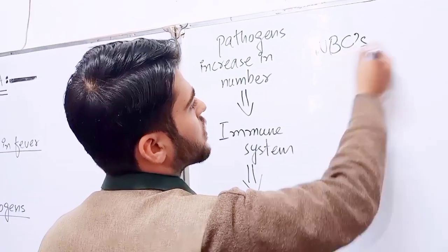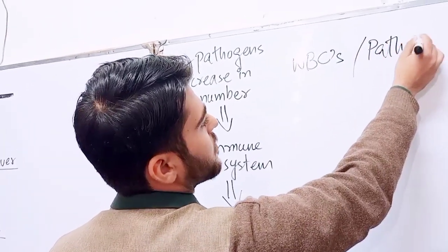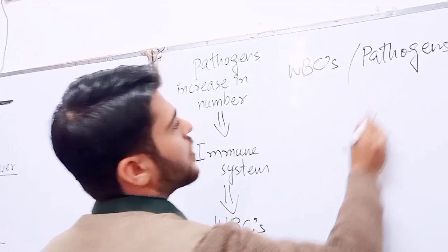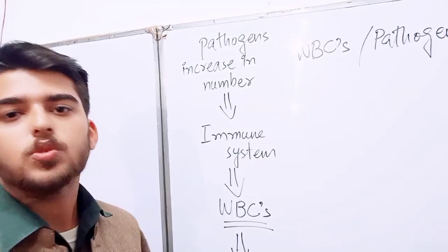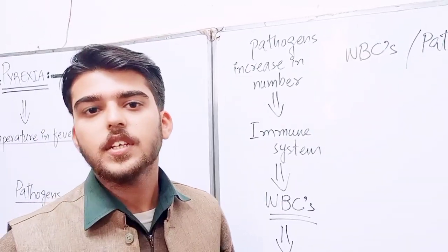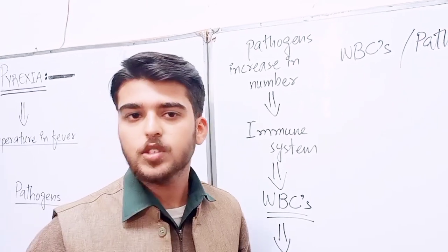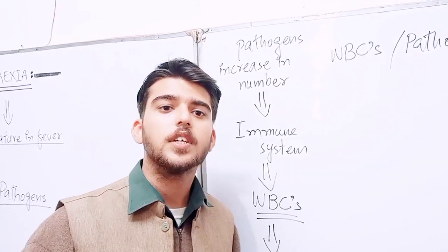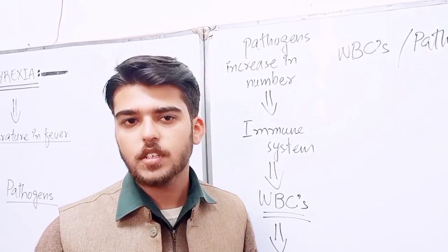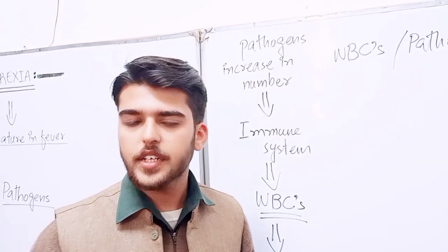Jab unki tadad zyada hoti hai to uske baad viral cells aur pathogens ki ladaai hoti hai. Jab viral cells pathogens ko khatam kar deta hai to temperature aahista aahista kam hone lagta hai. Hypothalamus ko khabar mil jaati hai ki mera normal body temperature is 37 degree centigrade.